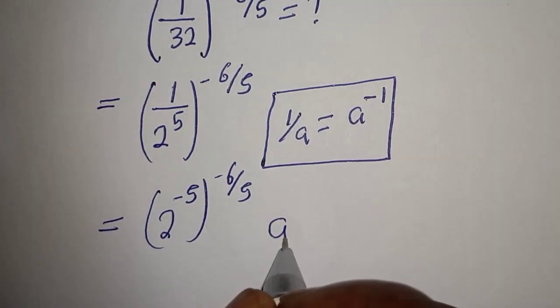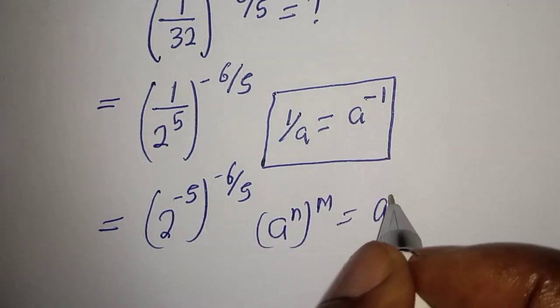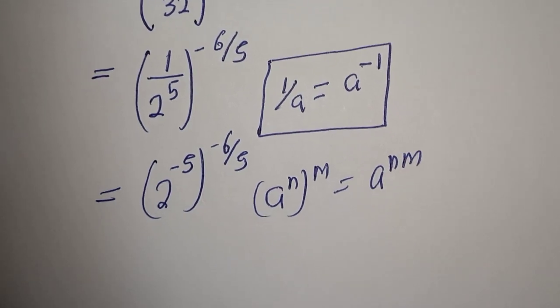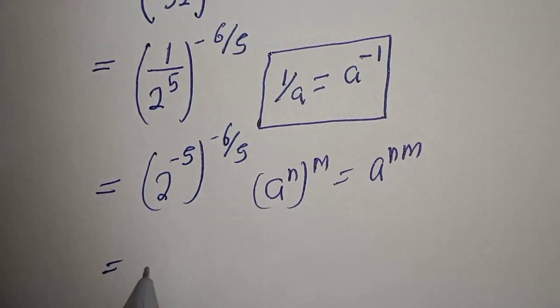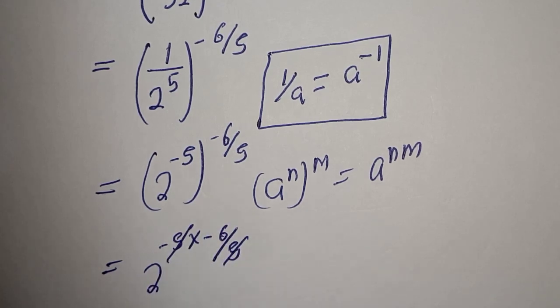Now, if you have A raised to the power of N to the power of M, this equals A raised to the power of N times M. So this can be written as 2 raised to the power of minus 5 multiplied by minus 6 over 5. This will cancel.